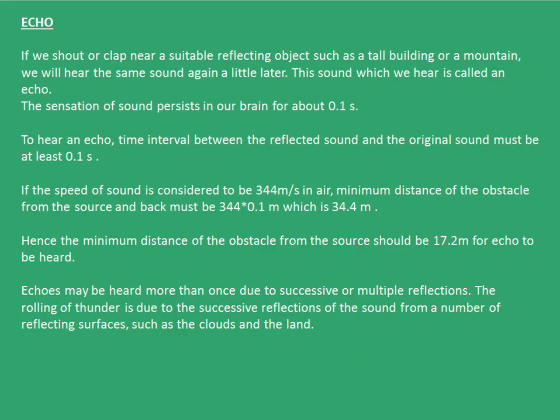Let's move on to echo. If we shout or clap near a suitable reflecting object such as a tall building or a mountain, we will hear the same sound again a little later. Many of us must have encountered this situation when we go for a picnic near mountains. This sound which we hear is called an echo. The sensation of sound persists in our brain for about 0.1 seconds. To hear an echo, the time interval between the reflected sound and the original sound must be at least 0.1 seconds.